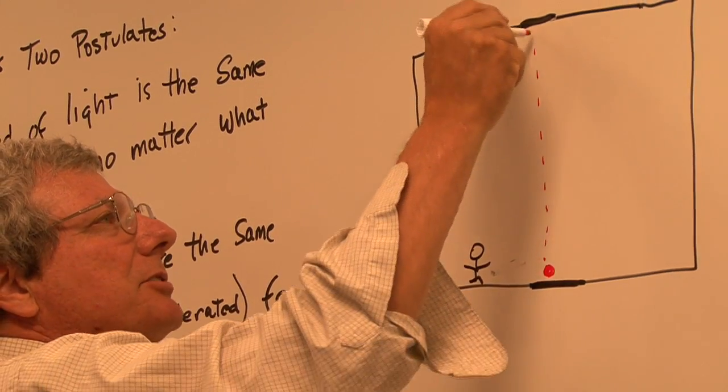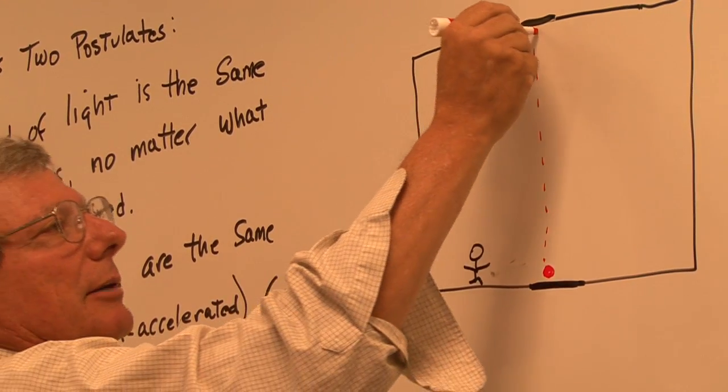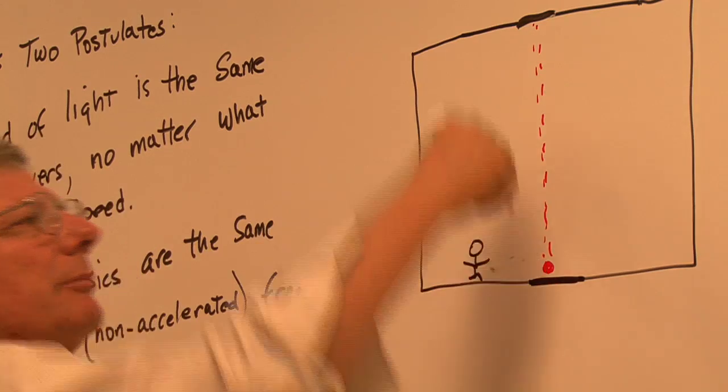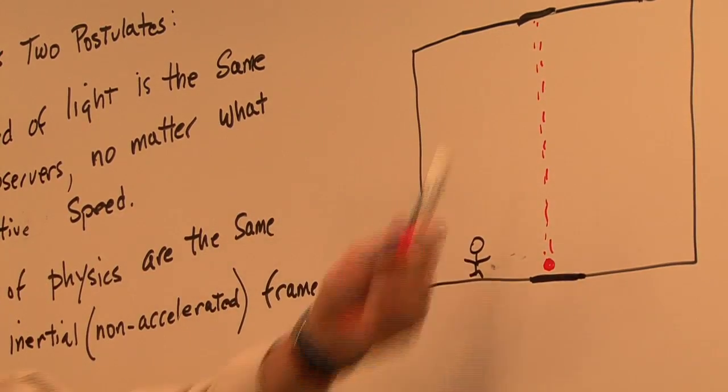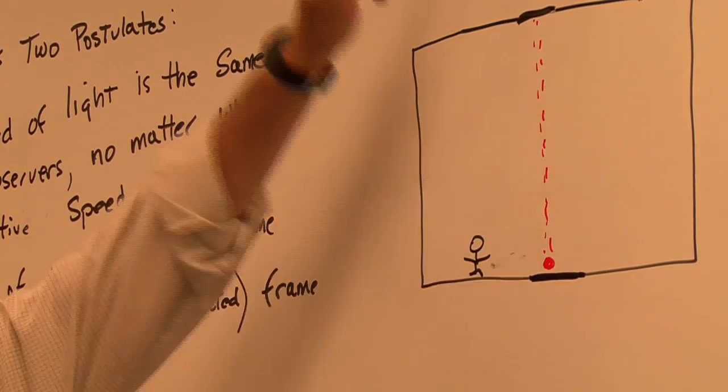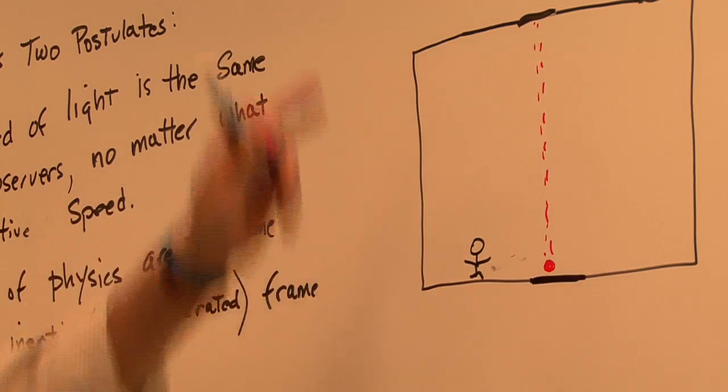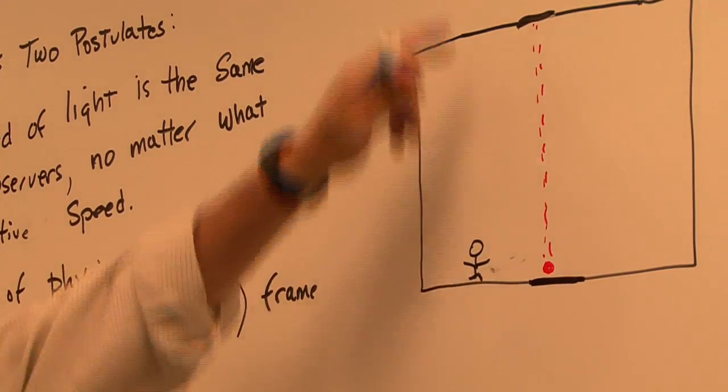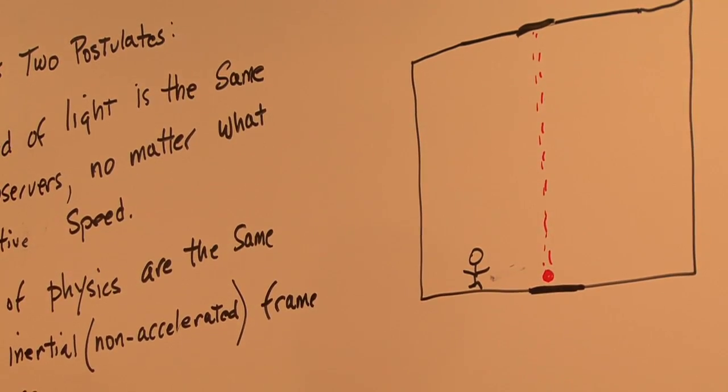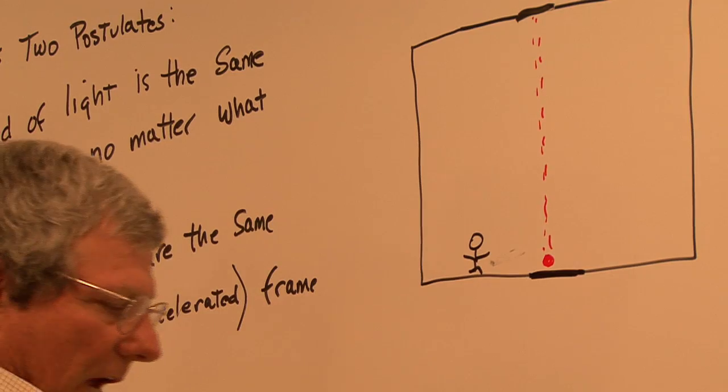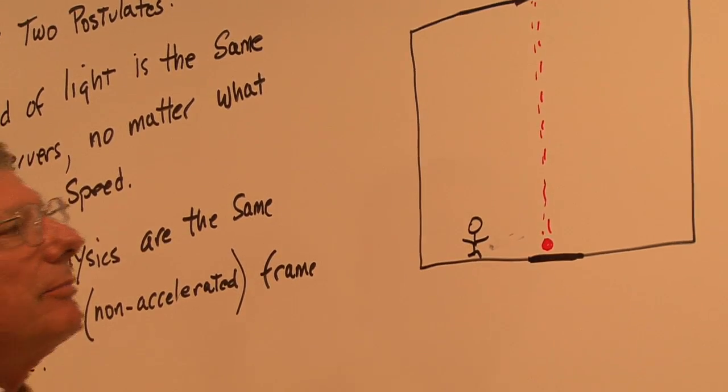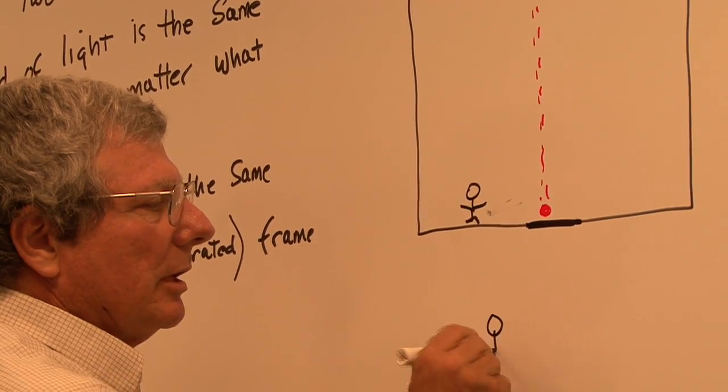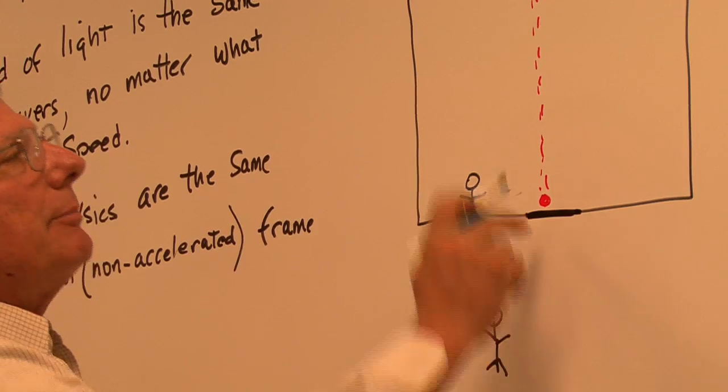It's going to be moving up here, bouncing on this mirror, and then coming back down. It'll be going tick-tock, tick-tock. And this guy sees that the light is going at the speed of light, going back and forth, tick-tock. And there's a person outside of this spaceship, and he sees the same thing.